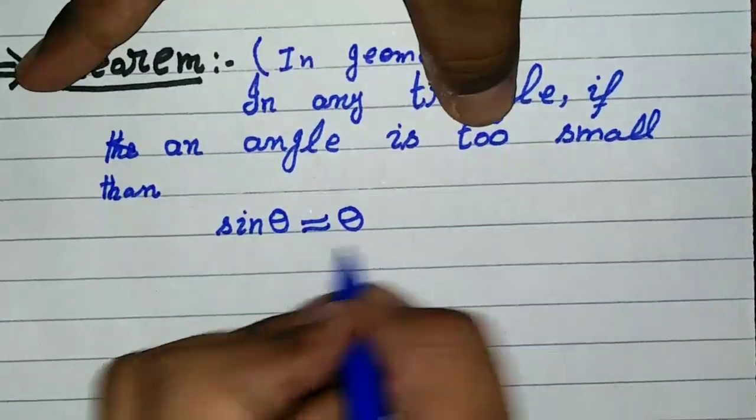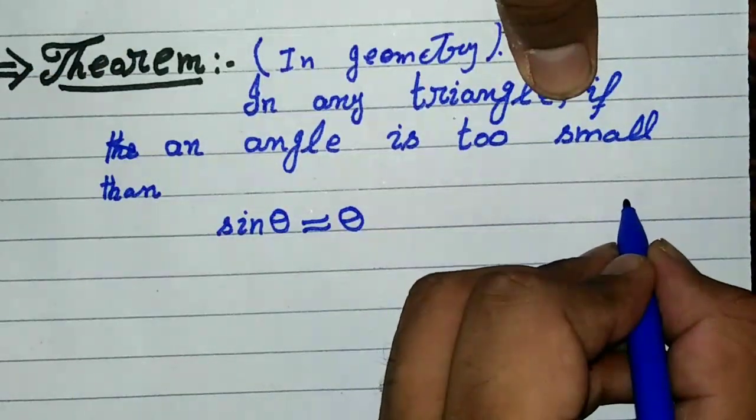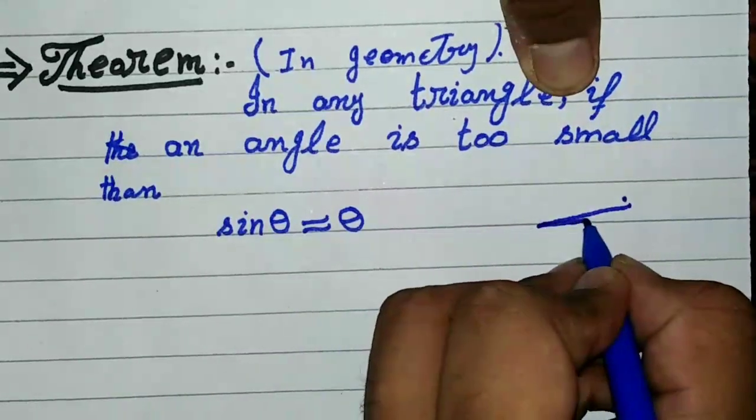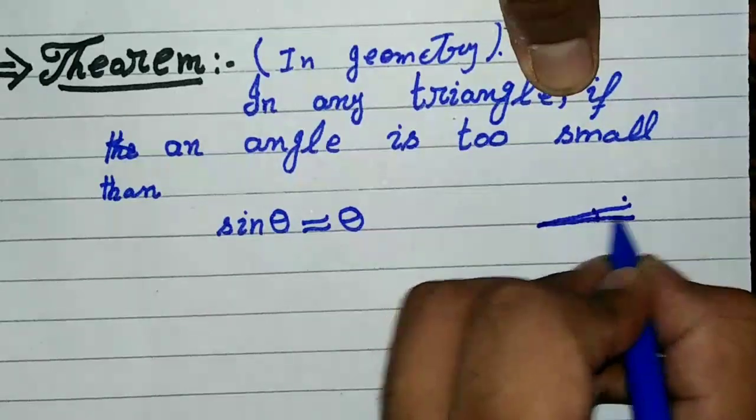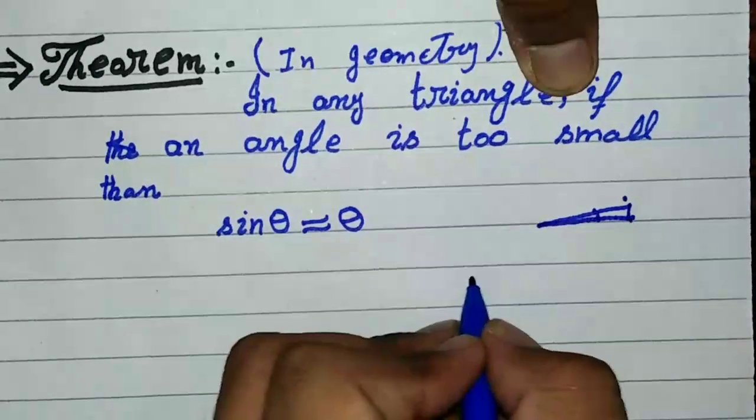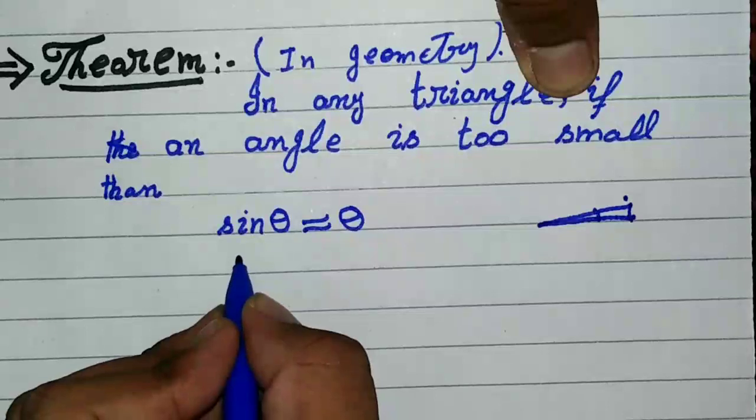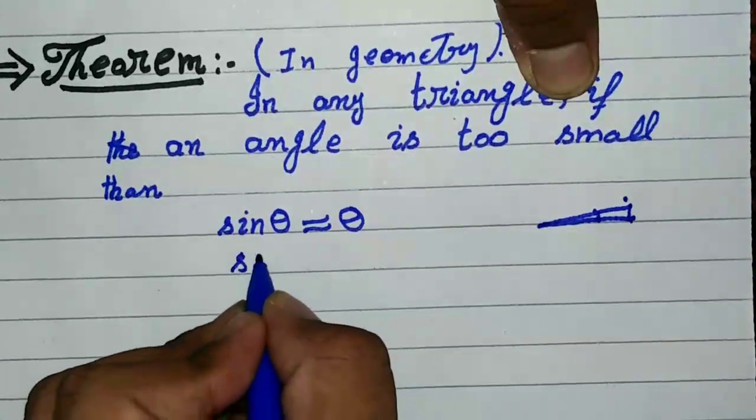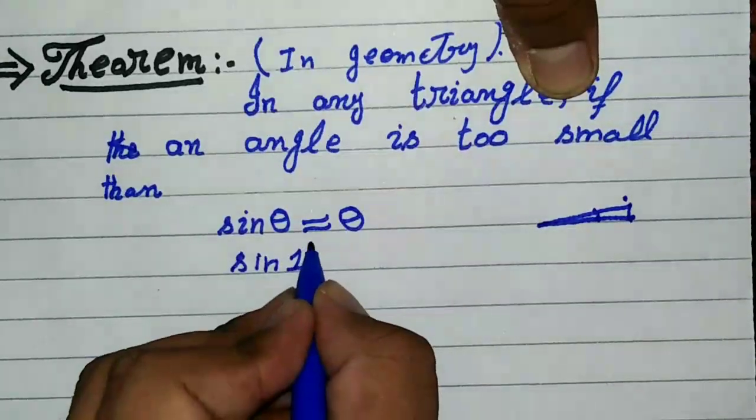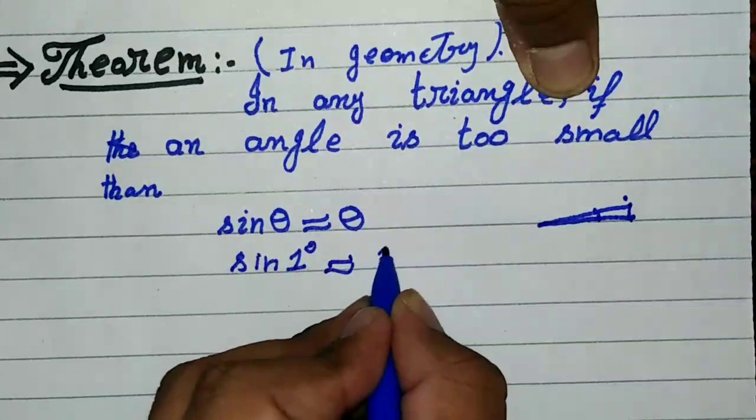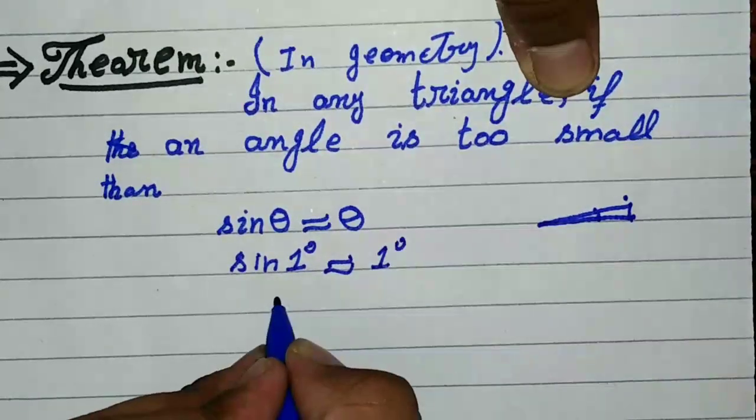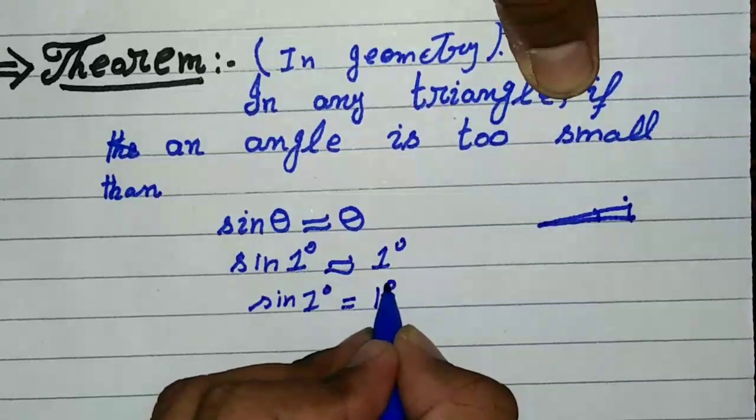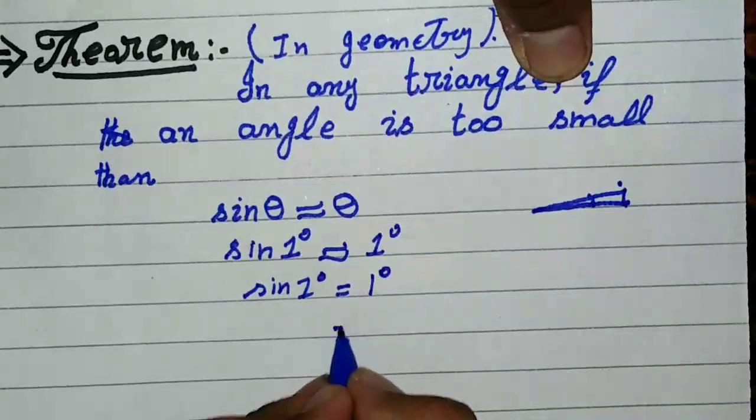If theta is too small, because if we draw a triangle of one degree, it means that theta is approximately small. So we want to find the value of sine one degree. Sine one degree is approximately equal to one degree, so we can write sine one degree equals one degree.